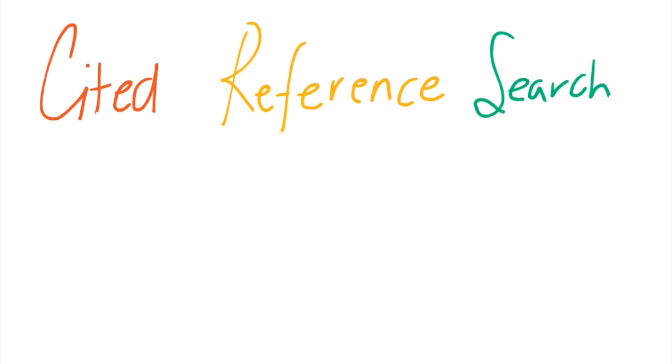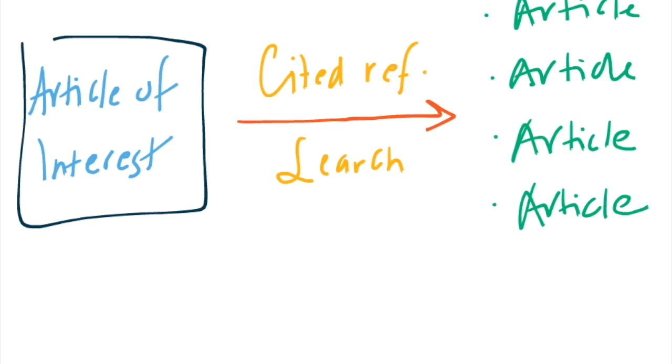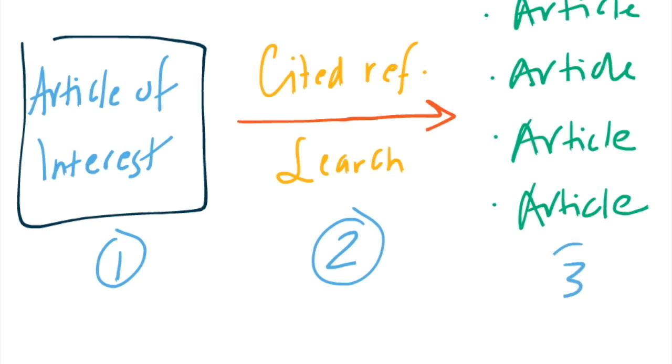The Cited Reference Search is a great research tool. It lets you take an article of interest and use information about it to find other works that have cited that article as a reference.